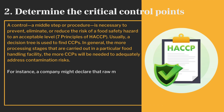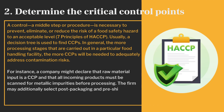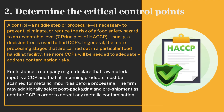For instance, a company might declare that raw material input is a CCP and that all incoming products must be scanned for metallic impurities before processing. The firm may additionally select post-packaging and pre-shipment as another CCP in order to detect any metallic contamination that infiltrated the goods during manufacturing.